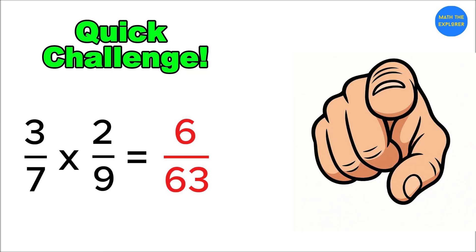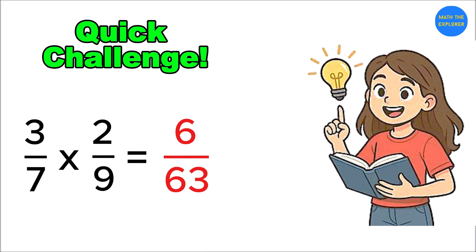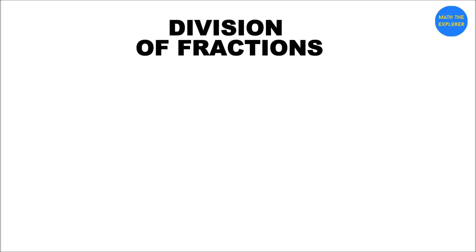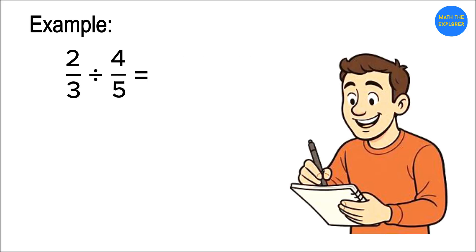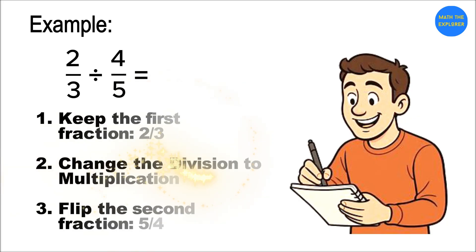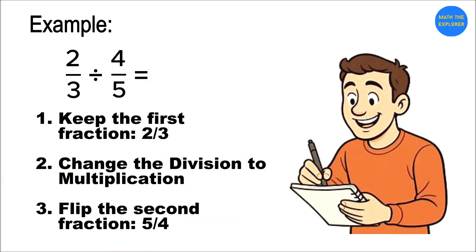Now division. Here's the magic trick: keep, change, flip. Example: 2/3 ÷ 4/5. Step one: keep the first fraction, 2/3. Step two: change division to multiplication. Step three: flip the second fraction, 5/4.